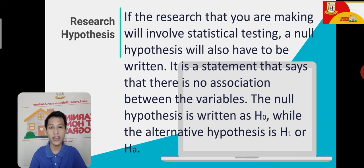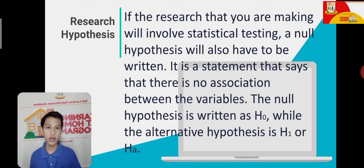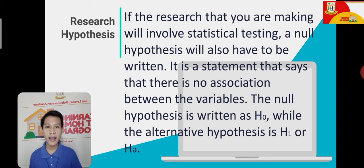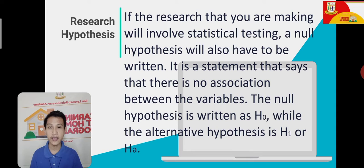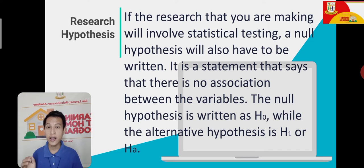Since Practical Research 2 is statistical, we need to write both the null and alternative hypothesis. The null hypothesis states that after the research, there is no effect of one variable on another. The alternative hypothesis states that there is an effect. For example, the alternative hypothesis would be: there is an effect with the hours of study spent on the exam score. The null hypothesis would be: there is no effect of the hours of studying on the exam score. They are contradicting statements.